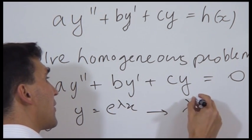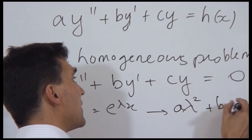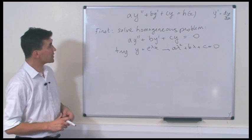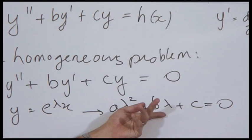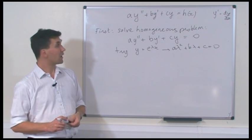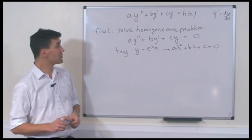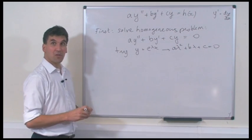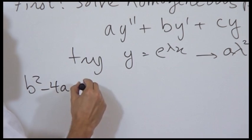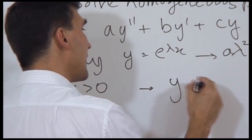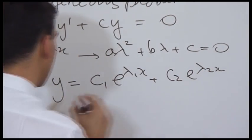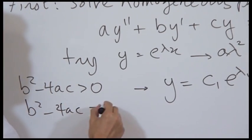That gives you the characteristic equation: A lambda squared plus B lambda plus C equals 0. There are three possibilities: either this equation has two real distinct roots, or it has a single real repeated root, or it has two complex roots. So there are three different solutions. In the case where B squared minus 4AC is positive, we get Y equals C1 times E to the lambda 1 X plus C2 times E to the lambda 2 X.